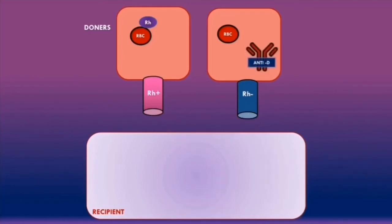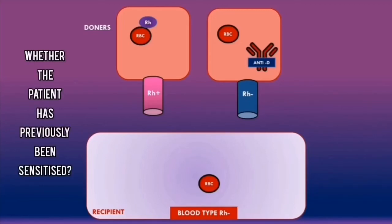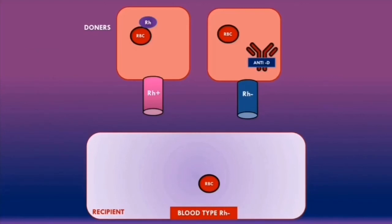For a recipient who is rhesus negative, the red blood cells do not contain any rhesus D antigens. Rhesus negative patients are capable of producing anti-D antibodies, but their presence depends on whether the patient has previously been sensitized to the rhesus D antigens. Let's first consider a patient who has previously been sensitized and therefore has anti-D antibodies in the plasma.